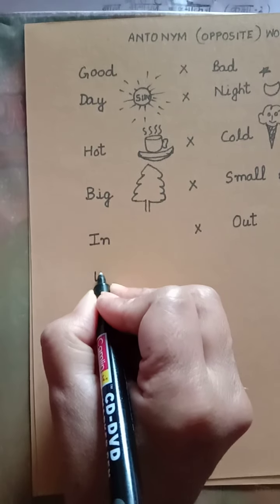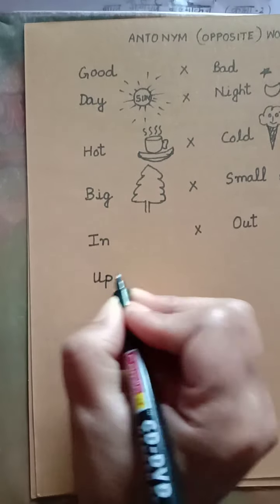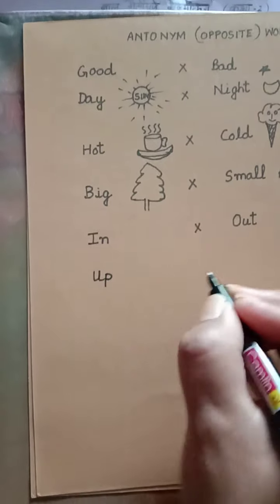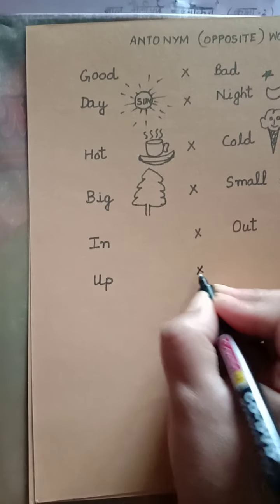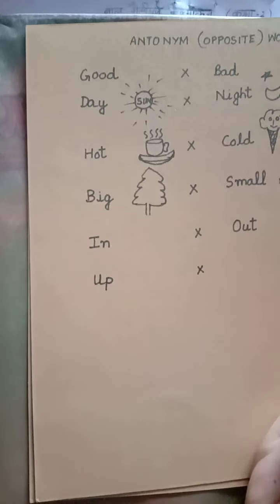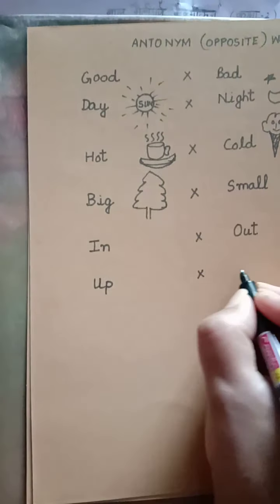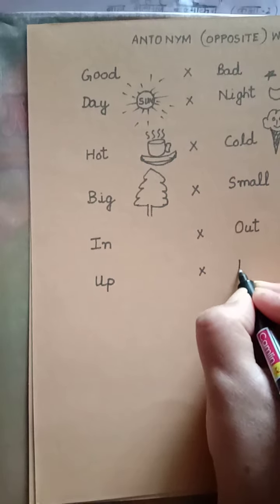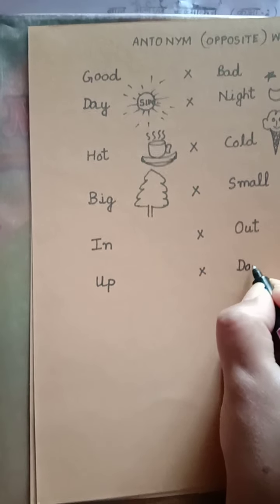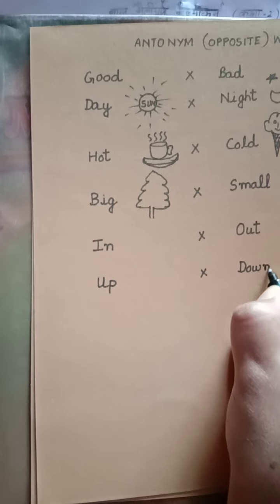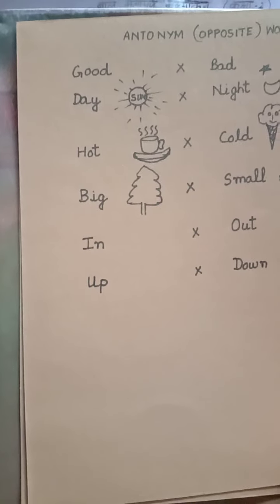Now we have the word up — U-P. Up means upar. The opposite of upar is neiche. So, up — down. D-O-W-N. Down means neiche.